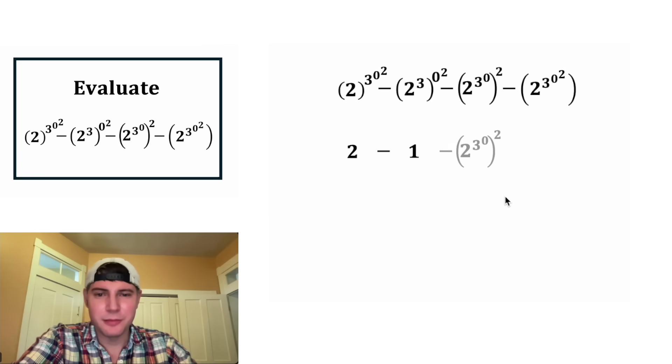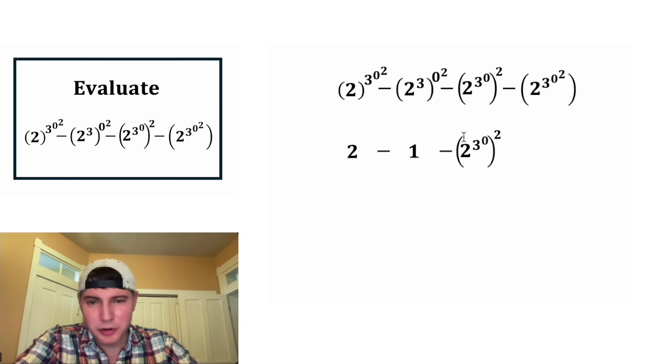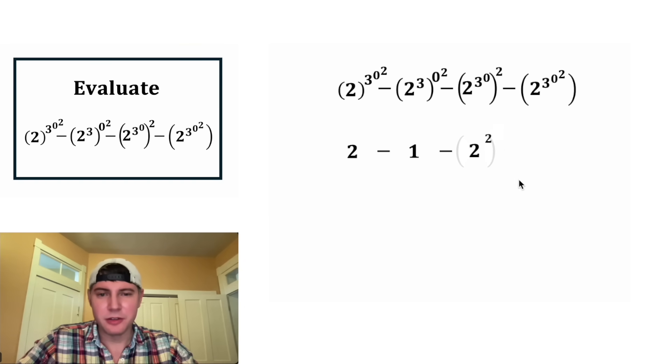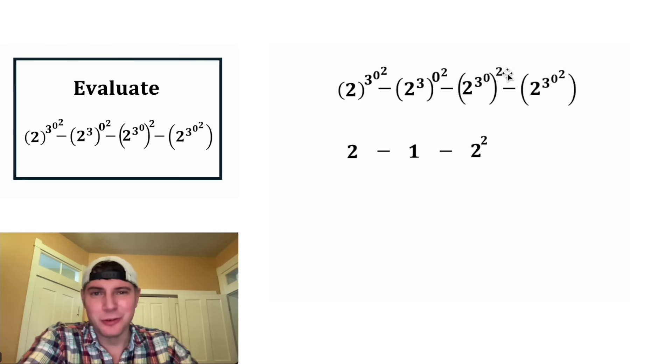Now let's do this term. For this one, we need to do inside the parentheses first, and we need to do the tower first. Three to the zero is equal to one. Then we can do two to the one, which is two. Now we can do the two squared, and that's equal to four. So this whole term was equal to four.